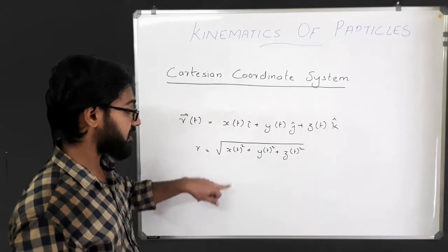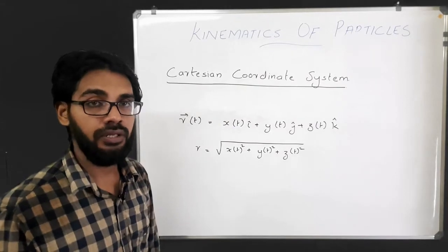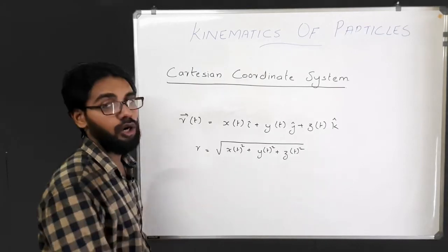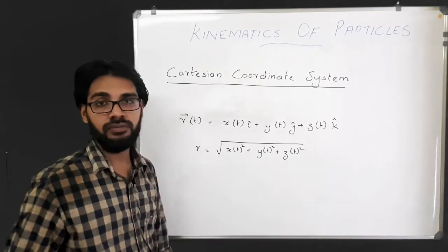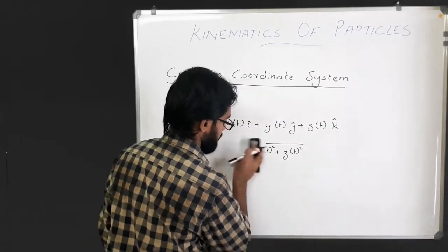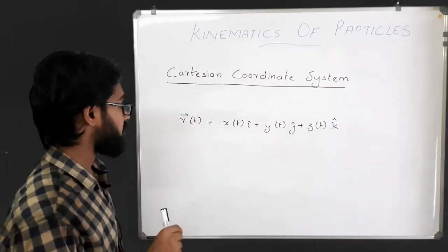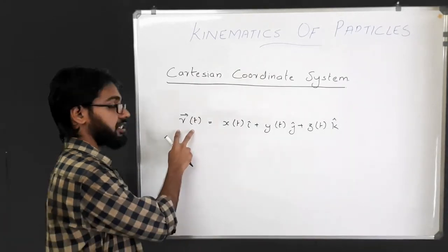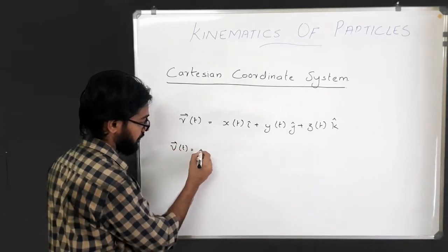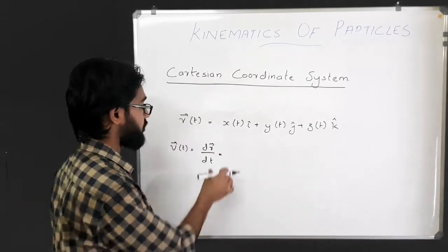You can substitute the corresponding value of t to obtain the position vector at each instant of time, and similarly substitute the value of t to get the magnitude of the position vector R. To find the velocity vector, we simply differentiate the position vector: velocity vector V as a function of time is dR/dt.